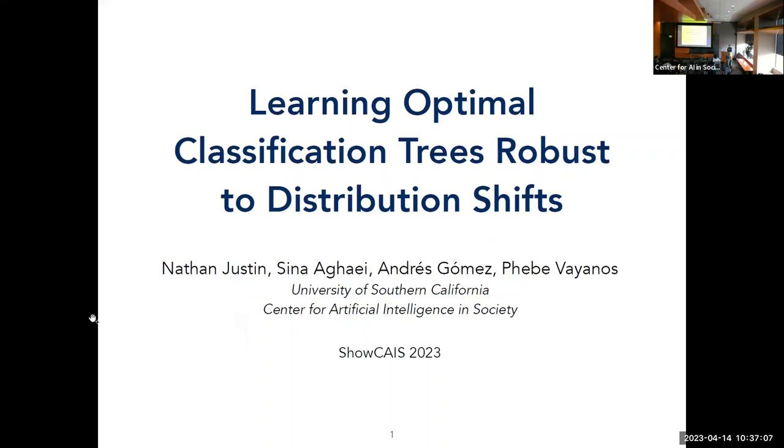Hello everybody. My name is Nathan Justin, and today I'll be talking about my work on learning optimal classification trees robust to distribution shifts, which is work done in collaboration with Sina Agai, Andres Gomez, and Phoebe Vianos.